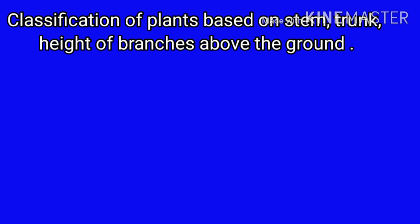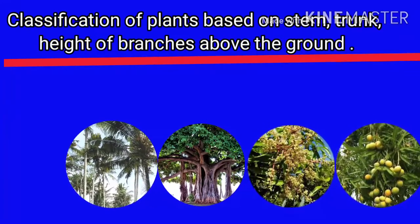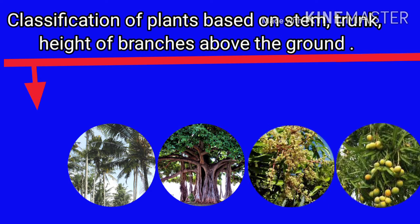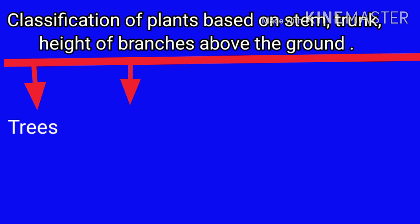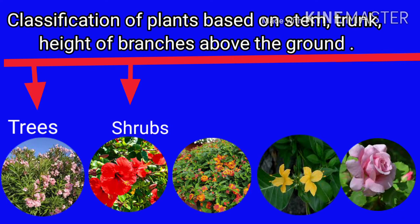Classification of plants is based on stem, trunk, and height of branches above the ground. Some plants grow tall with a hard and strong stem or trunk, have branches at some height above the ground, and bear flowers and fruit for many years — these are called trees. Trees are tall, big, and perennial, meaning they live for many years. Some plants grow close to the ground with branches very close to the surface. They are shorter than trees but have a thick, hard stem. Oleander, hibiscus, lantana, and rose are shrubs that may grow up to 2–3 meters.